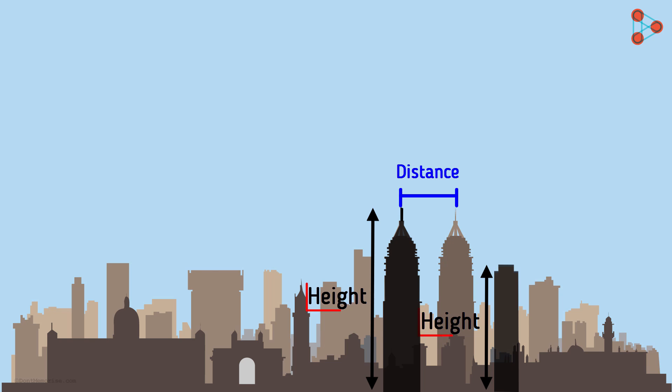How do we find these heights and distances using trigonometry? Let us see that with the help of an example. But first, let's talk about one more important thing before I put a question on the screen.